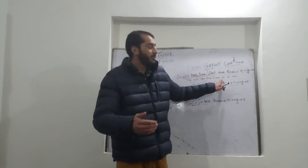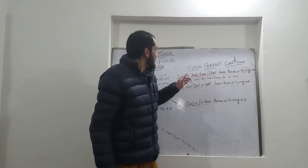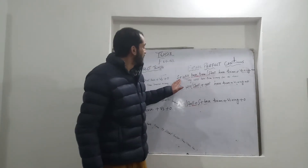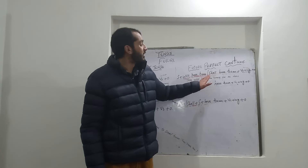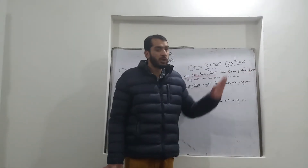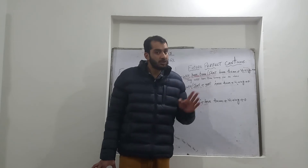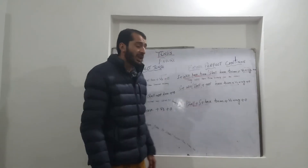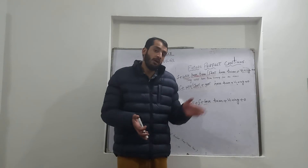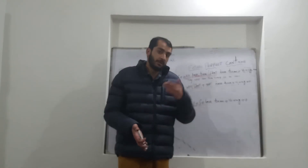In this example, 'for' is used because it indicates the duration of time. The structure is: subject plus will have been or shall have been plus verb base form plus -ing plus object plus 'since' or 'for.' Where to use 'since' and where to use 'for' has already been discussed in previous videos.